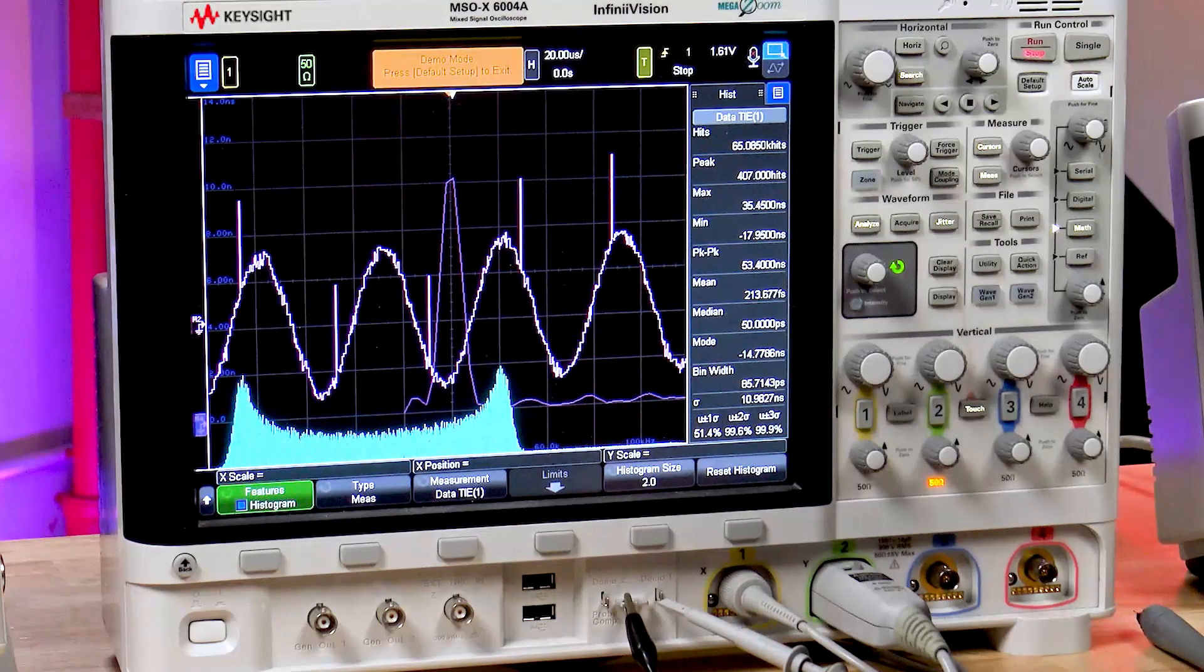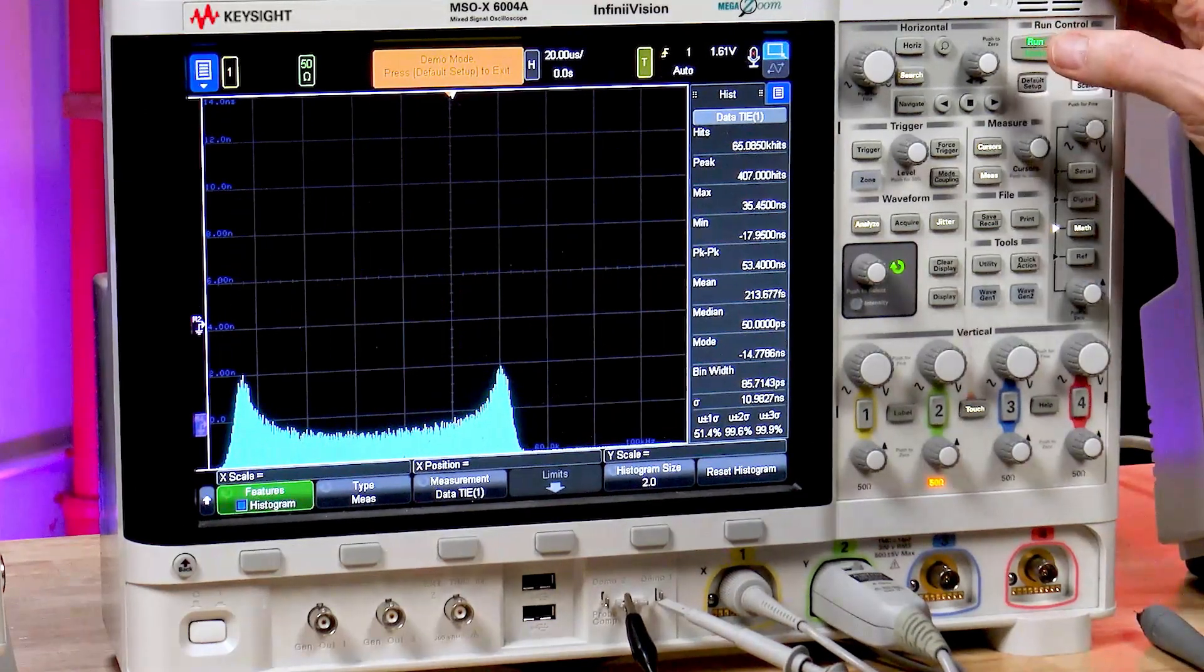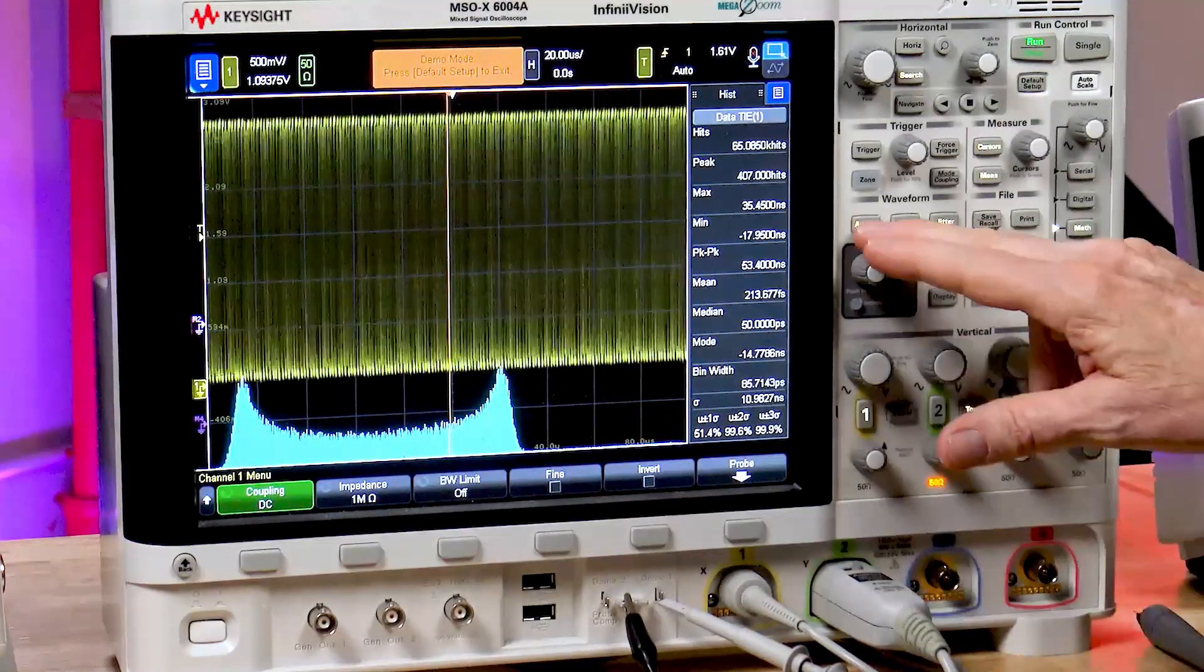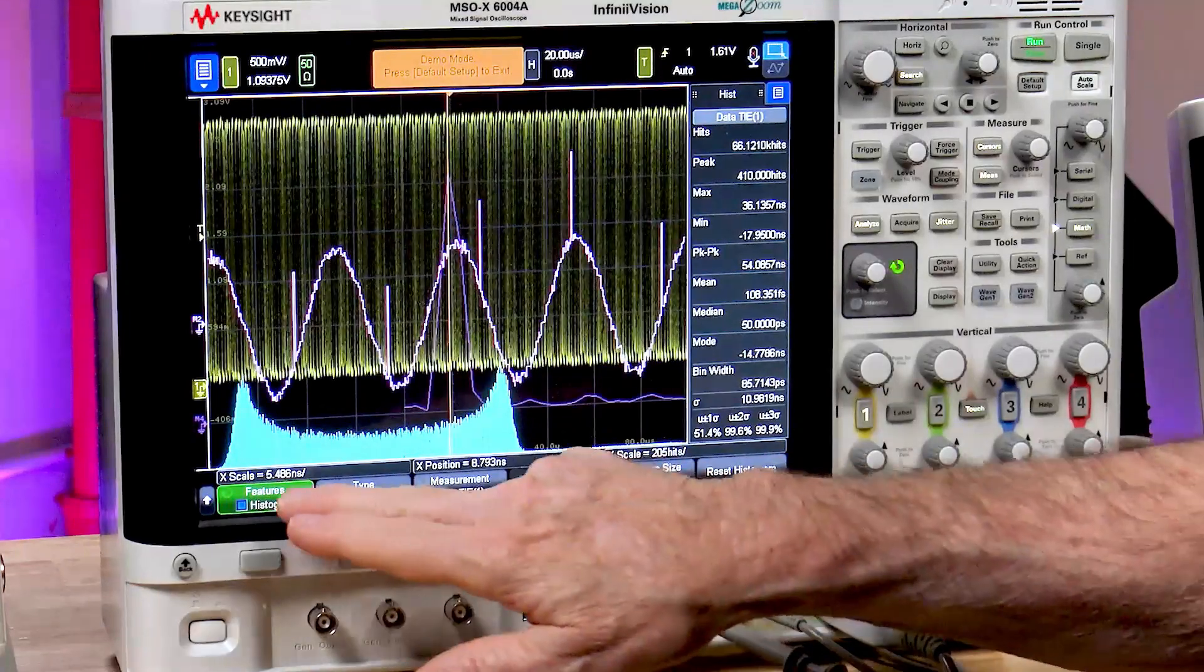Now, let's take one more view of the jitter. Let me press run again. Let me turn my waveform on. And let's look at this as an eye diagram.